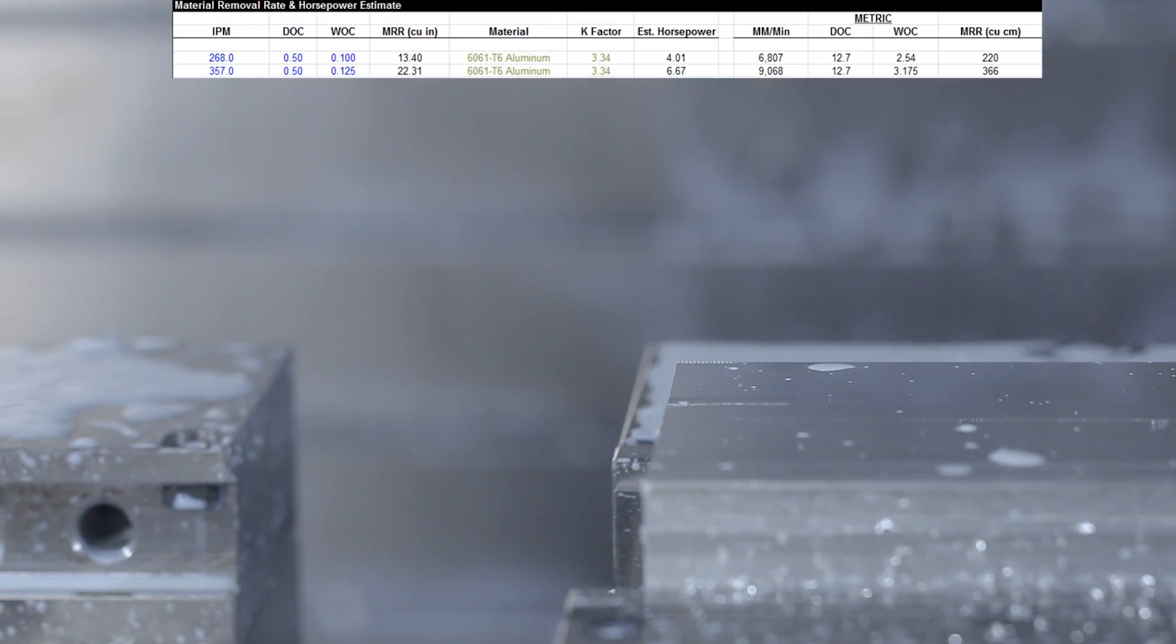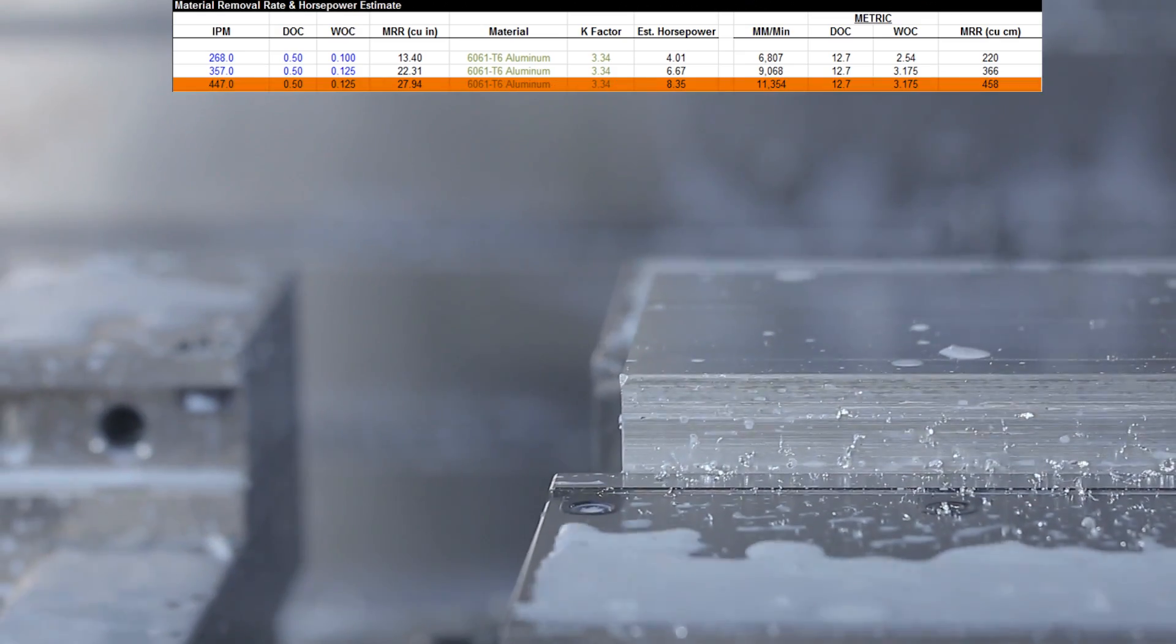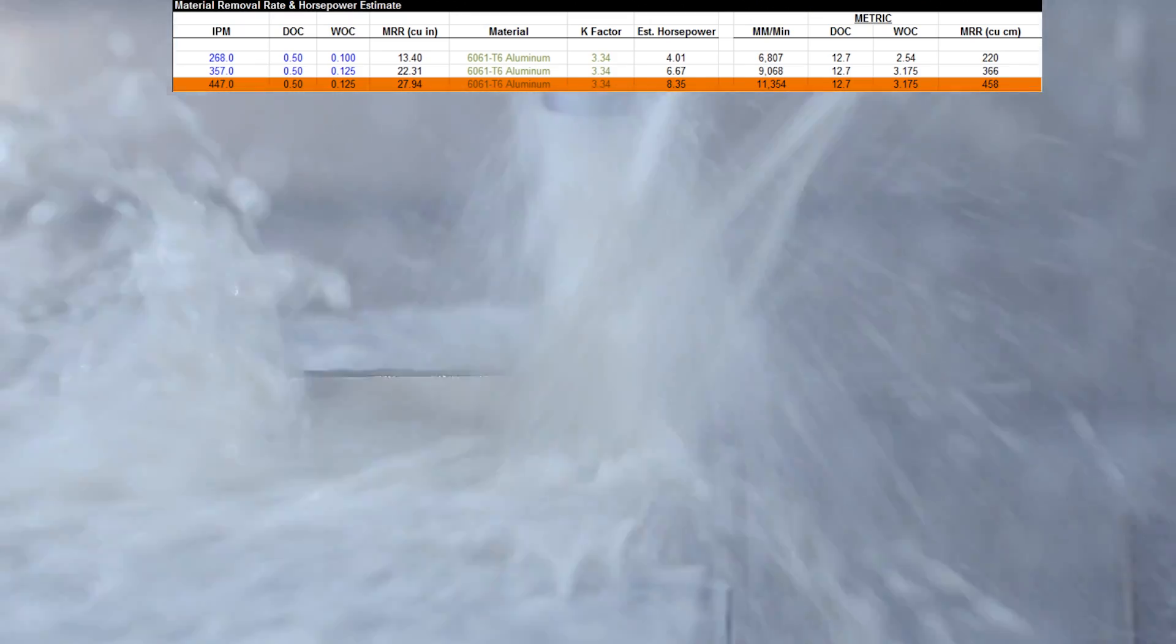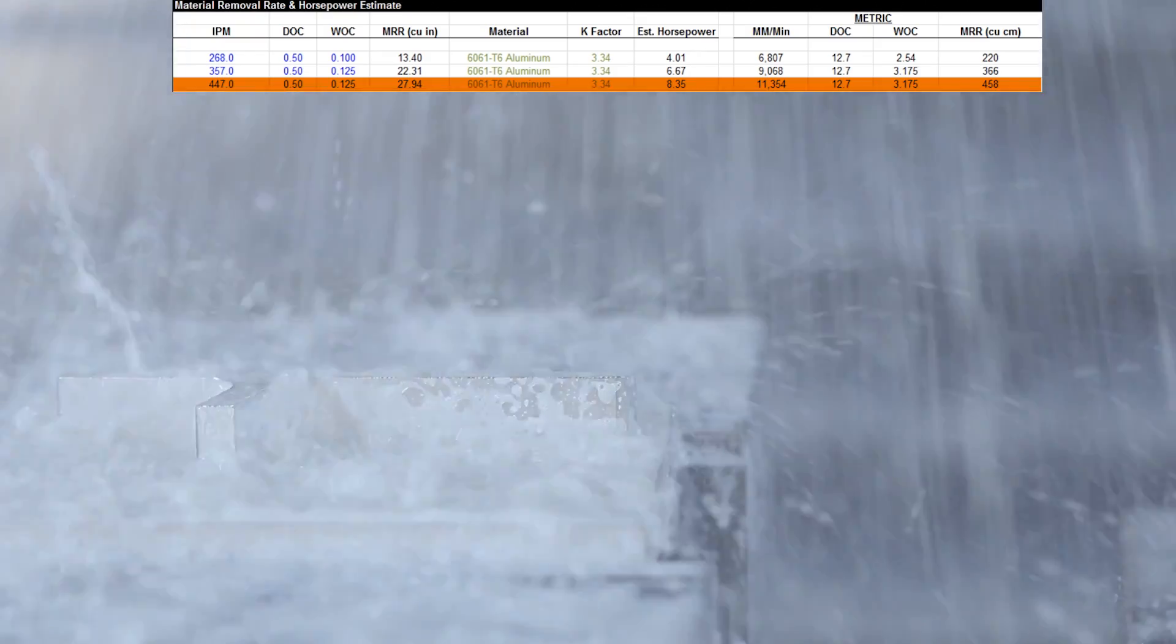Third cut, now we're cooking. 447 inches per minute, 28 cubic inches of material removal. Actually still only a little over 8 horsepower, so really well within the operating parameters of the VM3.